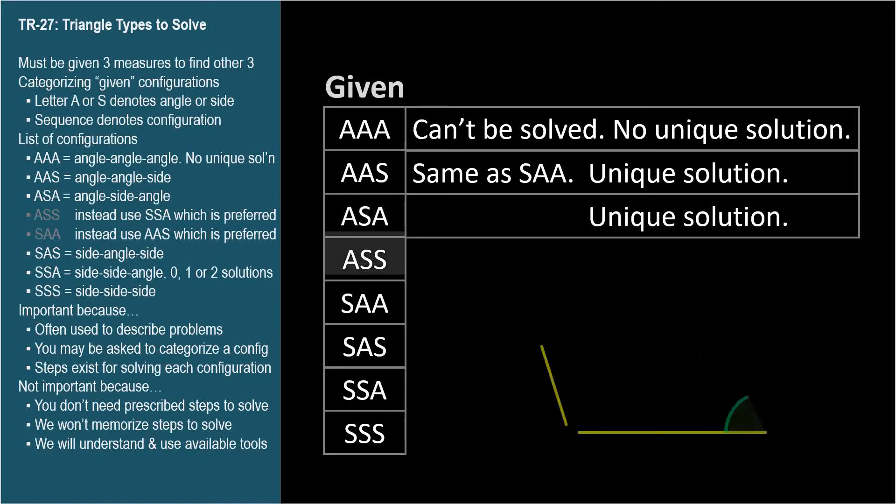ASS is angle, side, side. We know two sides and an angle not between them. ASS is symbolically the same as SSA, two sides and a non-included angle. For the sake of propriety and to avoid giggles...